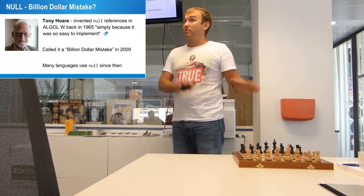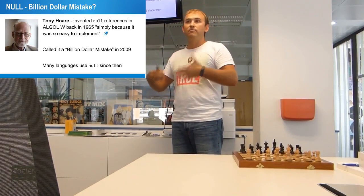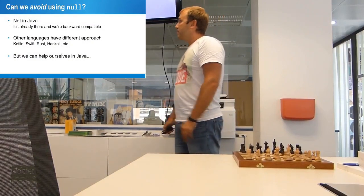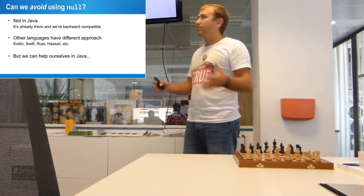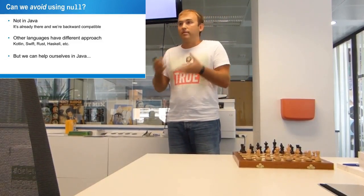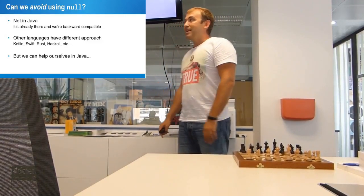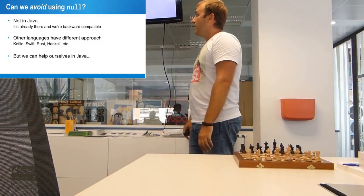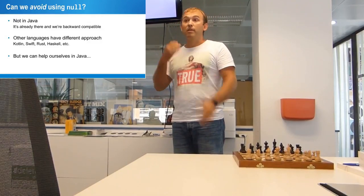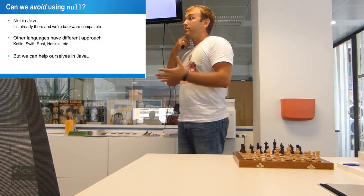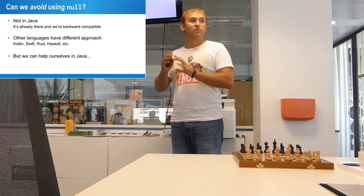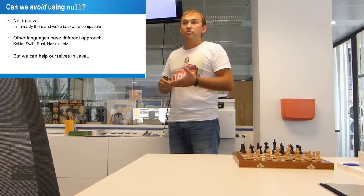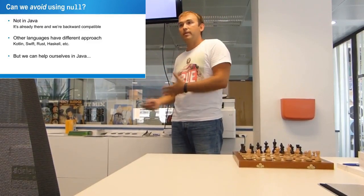Whether it was him or not, since languages like Algol W, a lot of languages have nulls and still use them — Java is one of those. The question is: if it's a billion dollar mistake, can we avoid nulls? In Java, not really, because it's there and will be there forever for backward compatibility. Sometimes null is actually easy to use to declare something as missing. Other languages that evolved after Java have a completely different approach — some don't have null by design and handle it inside the compiler. But with Java, we can help ourselves be safer about using nulls and eliminate the problems.